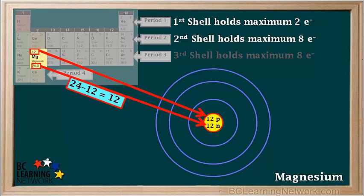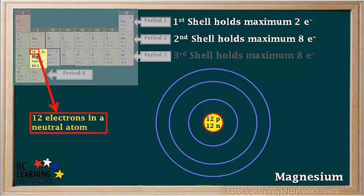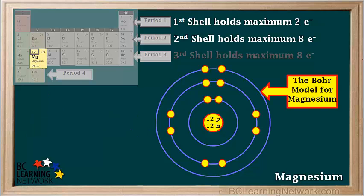You can see that magnesium has 12 protons, and its most common form has 24 minus 12, which is equal to 12 neutrons in its nucleus. Magnesium has 12 electrons in a neutral atom, so they can be arranged like this. This is one possible Bohr model for magnesium — it shows 2 electrons in shell number 3 as a lone pair.